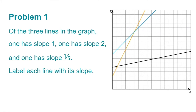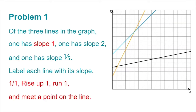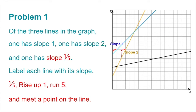Number 1. Of the three lines in the graph, one has slope one, one has slope two, and one has slope one-fifth. Label each line with its slope. For slope one, the rise is one and the run is one — one divided by one is one, going up one and running right one. For slope two, the rise is two and the run is one — the yellow line goes up two units and runs right one unit, so the yellow line is slope two. For slope one-fifth, the rise is one and the run is five — the black line is slope one-fifth.